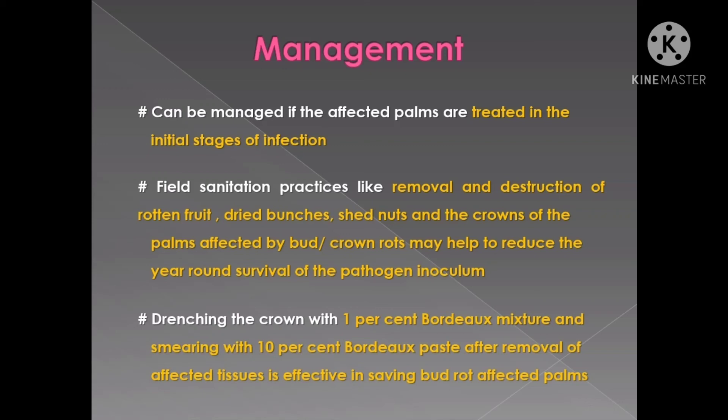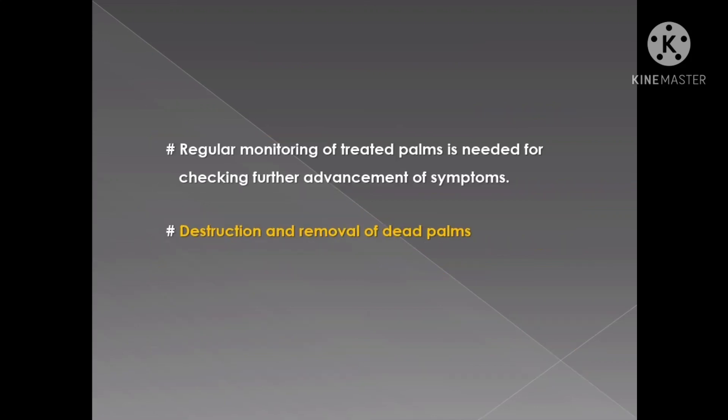Drenching the crown with 1% Bordeaux mixture and smearing it with 10% Bordeaux paste after removal of the affected tissue is effective in managing bud rot. Regular monitoring of treated palms is needed to check for further advancement of symptoms.